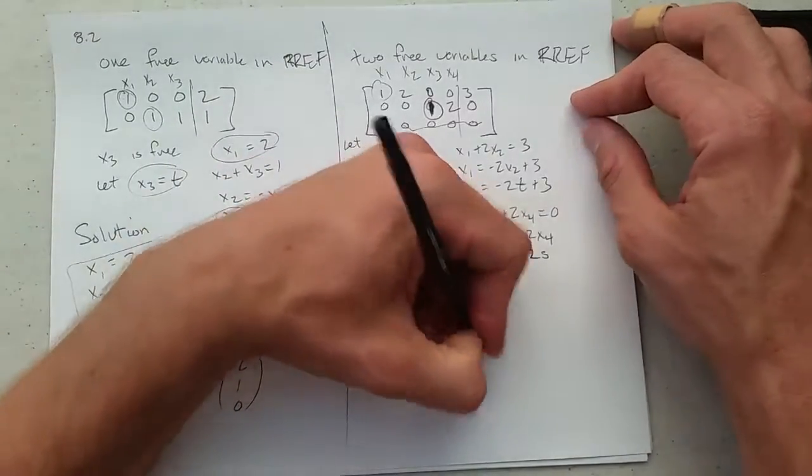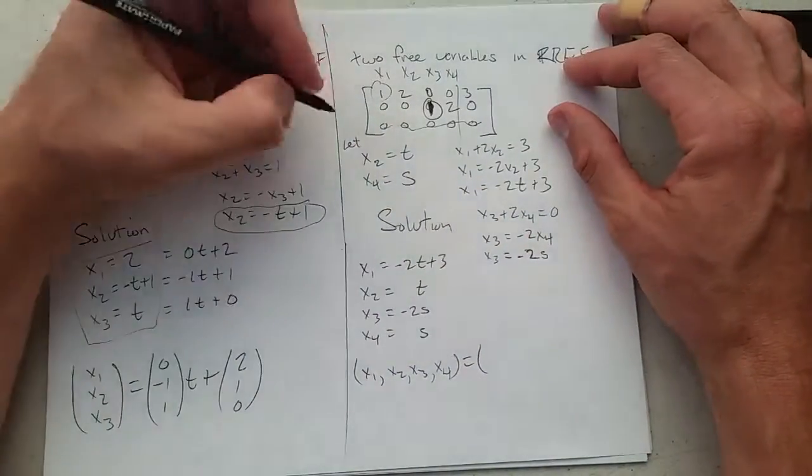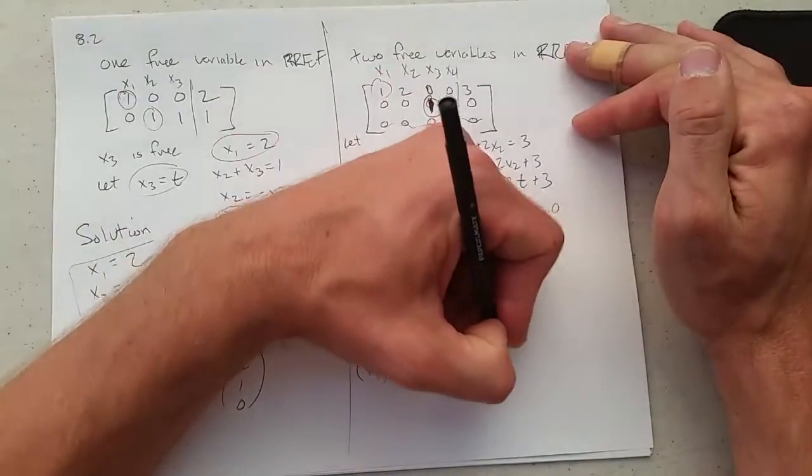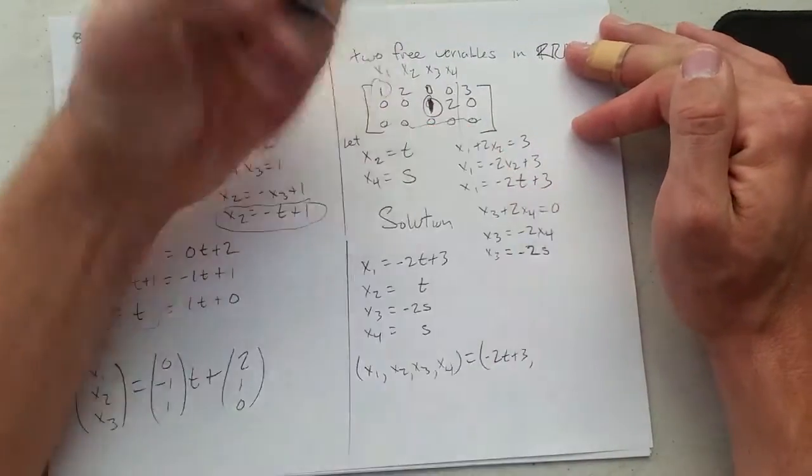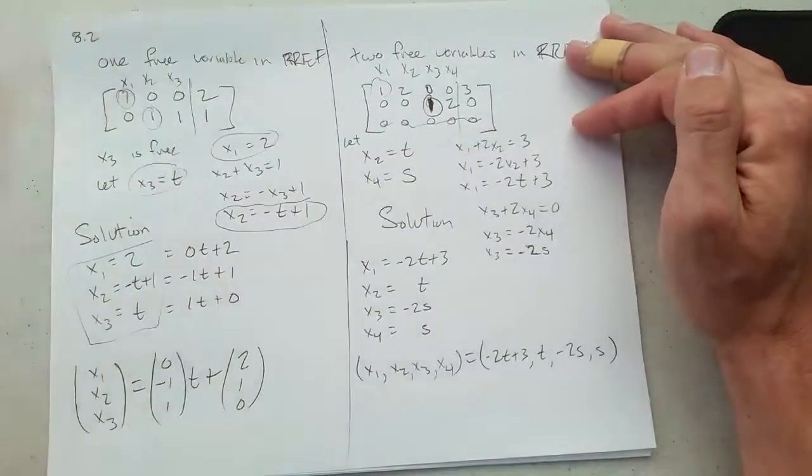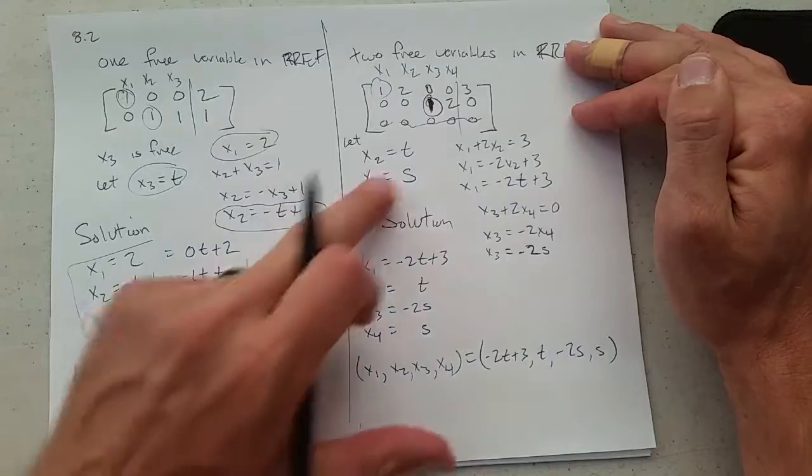x4 equals s. Also write it as more like in a point form. It's really just horizontal form instead of vertical form. Exact same information. Just written out like that.